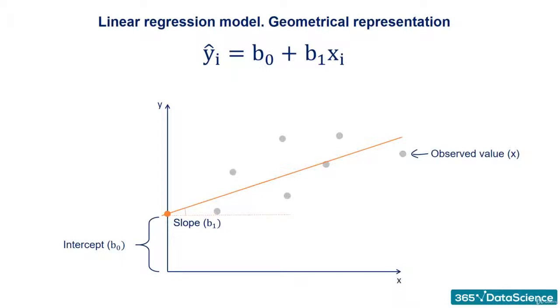The distance between the observed values and the regression line is the estimator of the error term epsilon. Its point estimate is called residual.